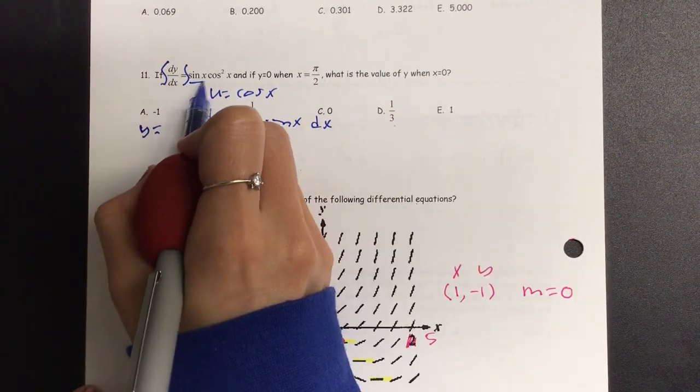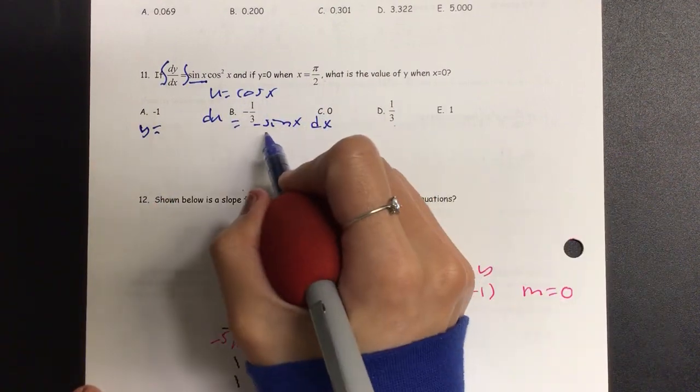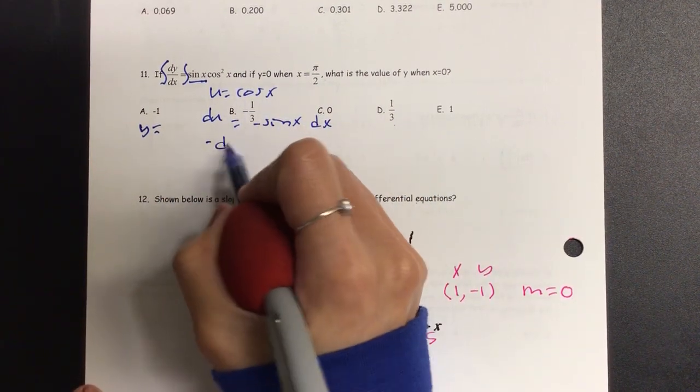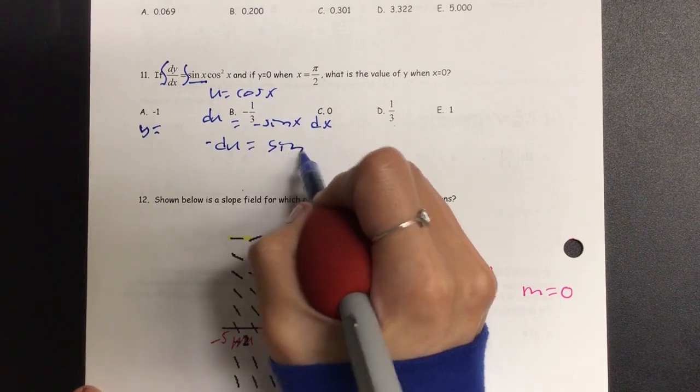Now the problem is, I have sine x, but I don't have negative, right? So let's kick it out. So negative du is equal to sine x dx.